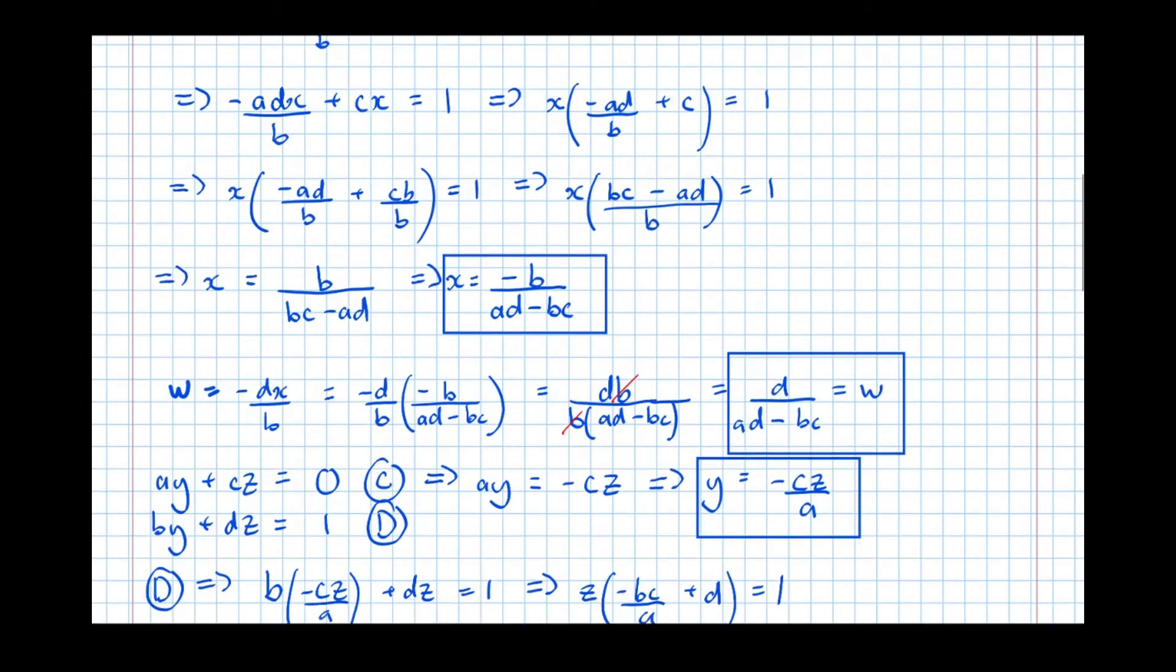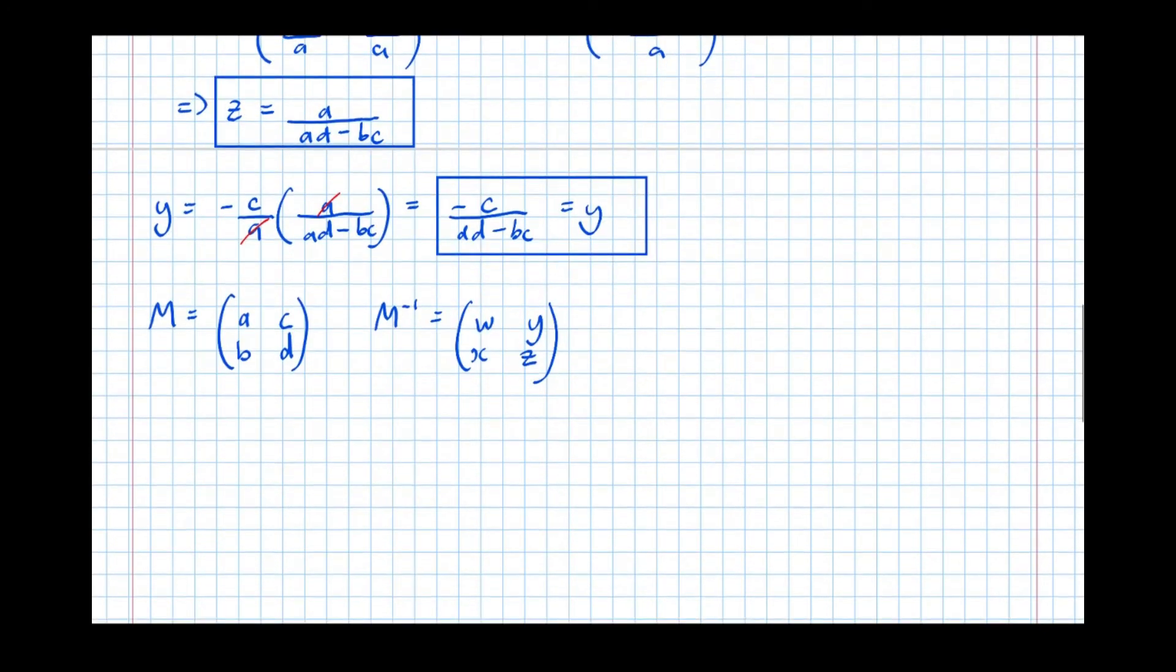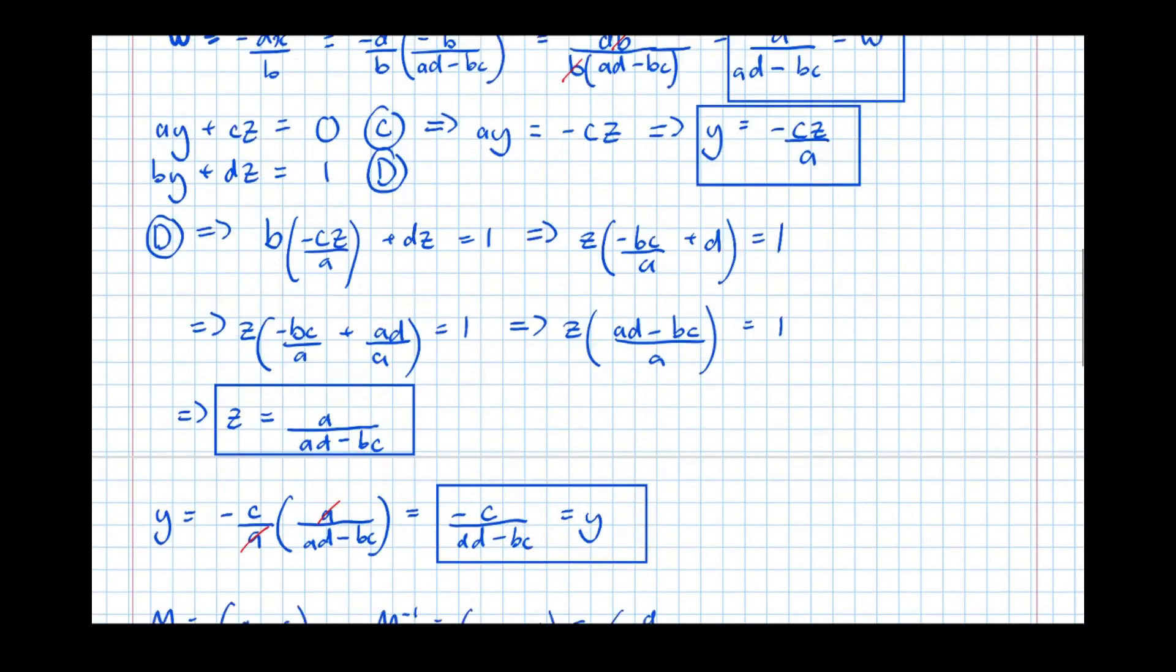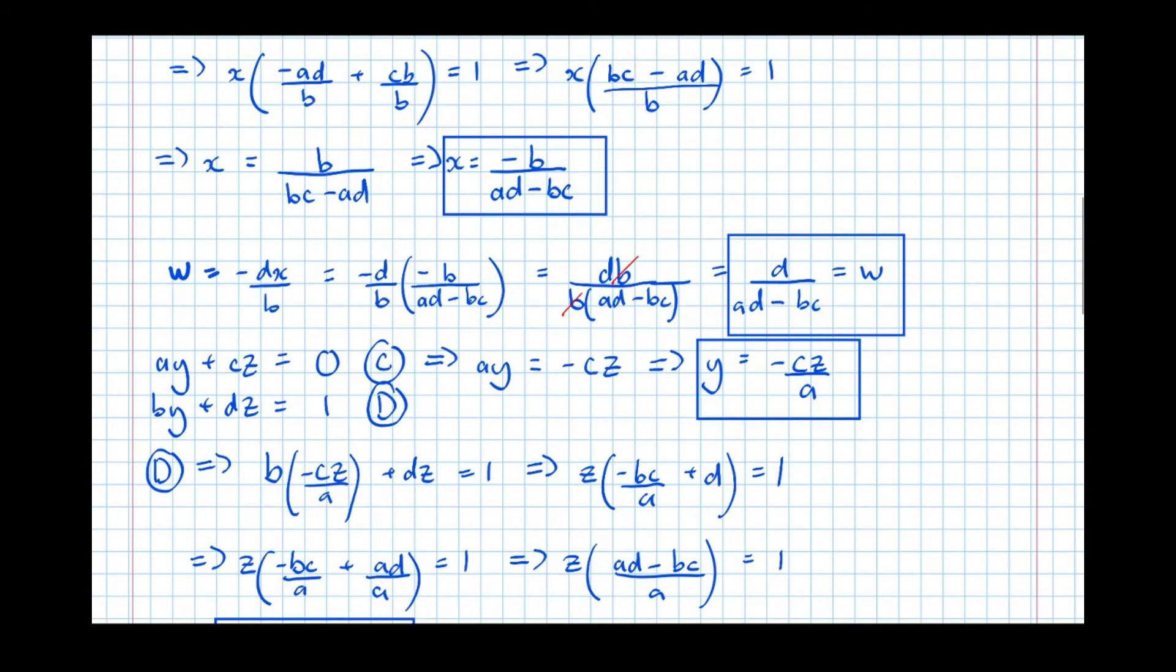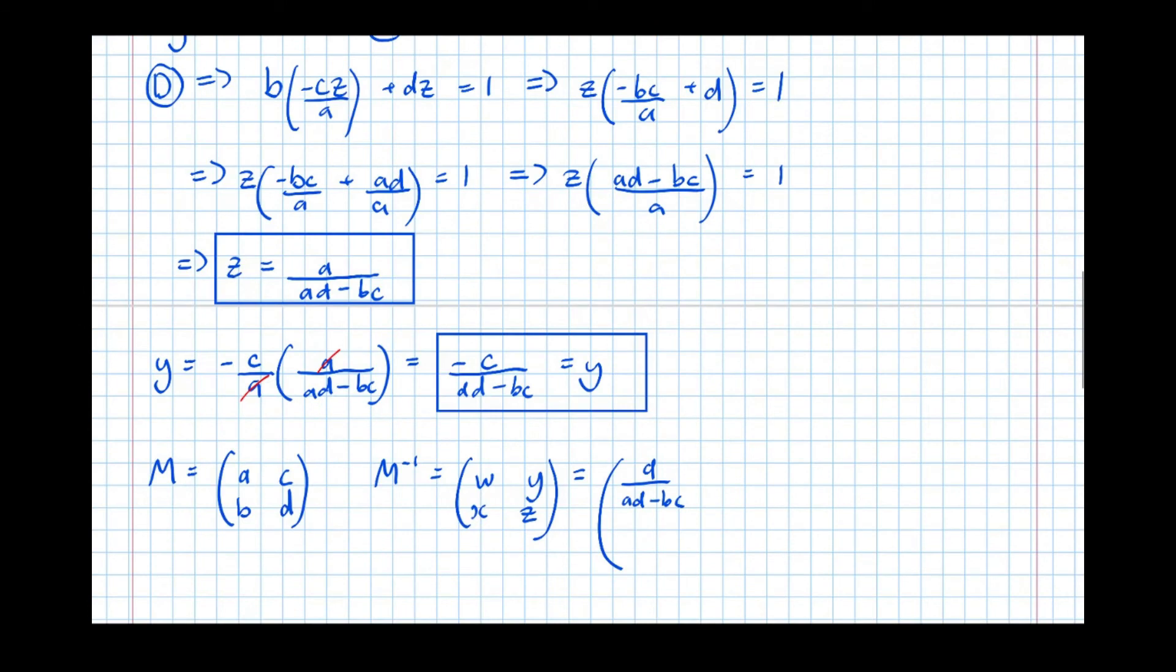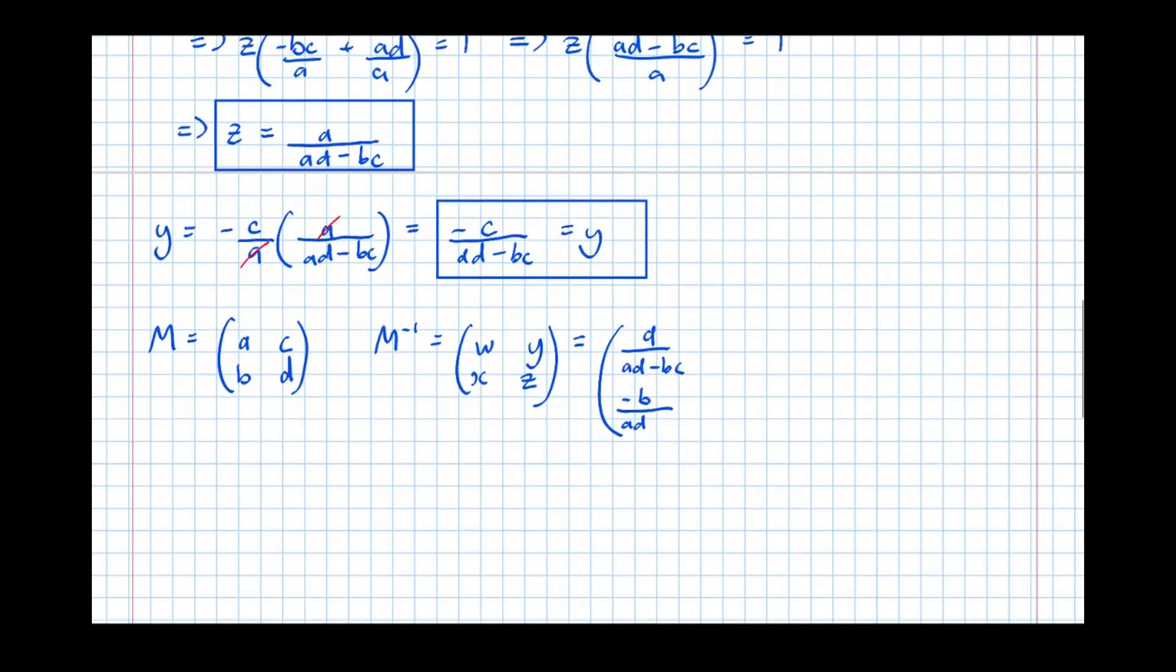But we worked out W earlier, there it is there, to be D over AD minus BC. So W is D over AD minus BC. We've got X as being minus B over AD minus BC. So minus B over AD minus BC. We've got Y as being minus C over AD minus BC. And Z which was A over AD minus BC. And notice with this, we can take out a factor of 1 over AD minus BC from each term. So let's do that to give D, minus B, minus C, A.